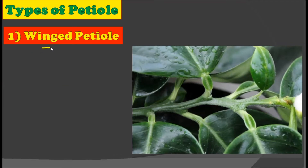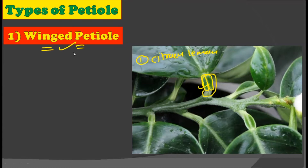The very first is wing petiole. As you can observe in this picture of a citrus lemon, you can clearly see how the petiole modifies into a wing-shaped structure — these two structures look like two wings. That is why it is called the wing petiole. It is most often found in the citrus plant. You can observe how the petiole gets modified into a wing-like structure, and that is why it is called the wing petiole.